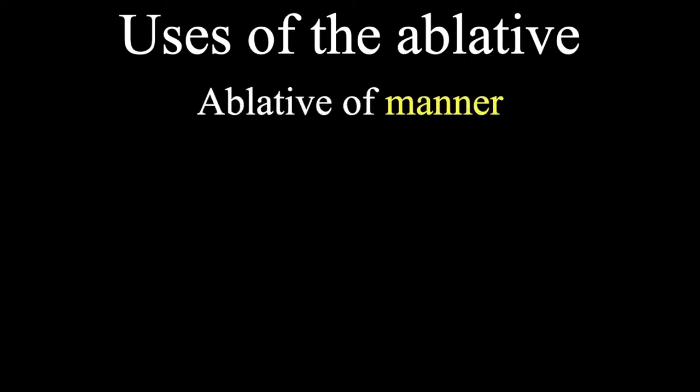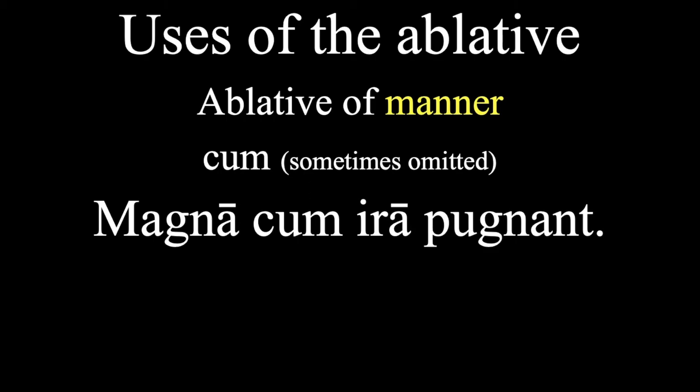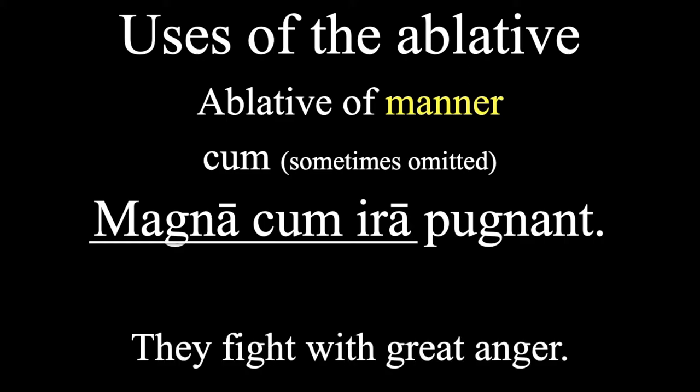First, the ablative of manner tells us how someone is doing something. It usually uses the preposition cum, which means with, but that cum can be omitted, and it still works. So, in the phrase, magna cum ira pugnant, here's the prepositional phrase. And this means, they fight with great anger. Now, as I said, the cum can be omitted, so it could just be magna ira pugnant, and it would mean exactly the same thing.